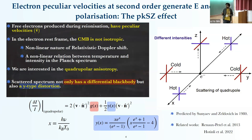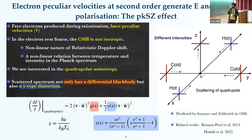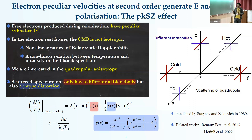In this equation, the quadrupolar part of the relative intensity has a y-type spectrum, with amplitude given by the square of the electron velocity, where n-hat is the direction of the incoming photons. This was first predicted by Sunyaev and Zeldovich in the 1980s.